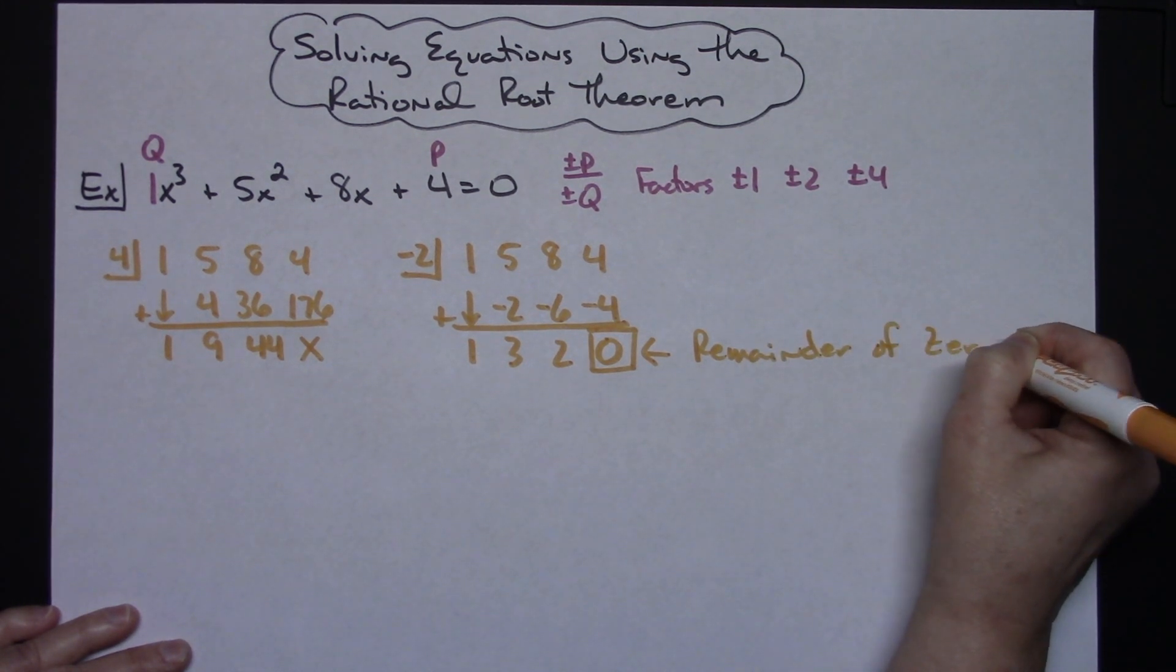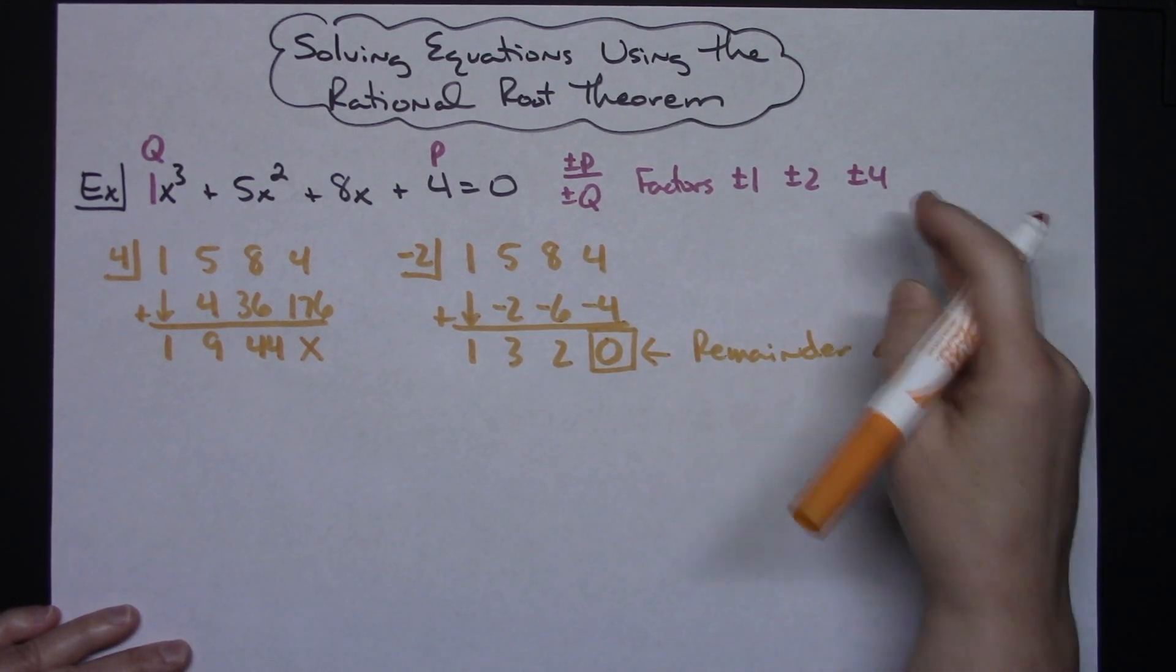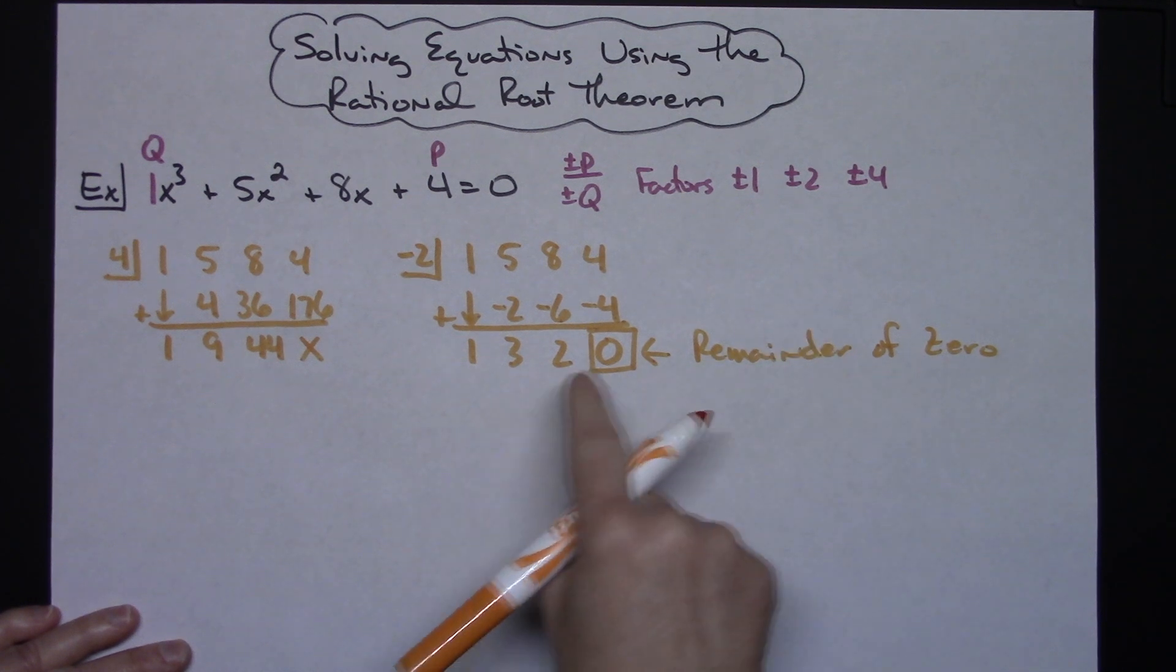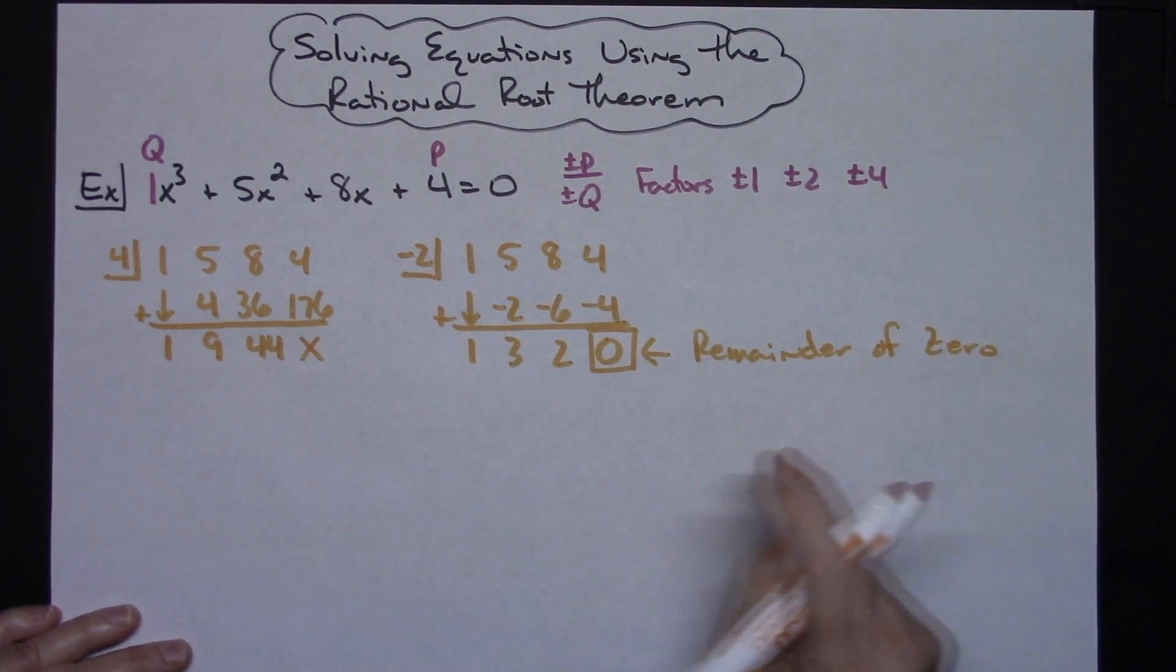The reason I wanted to do one that wasn't going to work out is because not every one of those numbers are going to be a factor. So you're not always going to get a remainder of zero. So you could have to in theory try several of them until you find one that comes up with that remainder of zero.